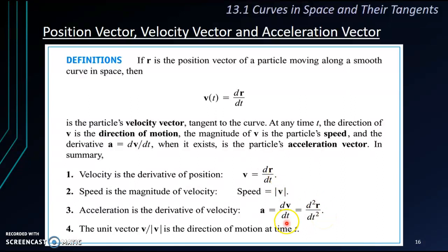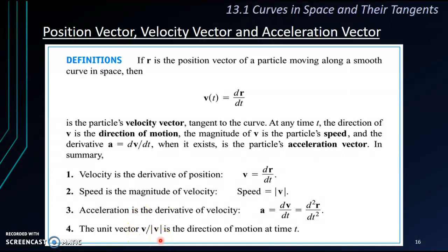Besides velocity and acceleration, we also want to know about the speed. The speed is always the magnitude of the velocity. And when we talk about direction, we find it from v over the magnitude of v.